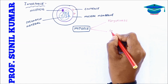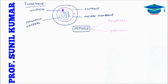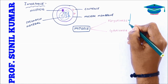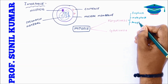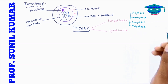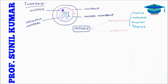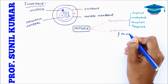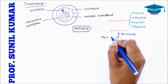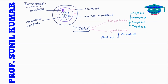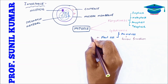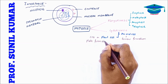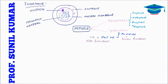Let's understand the first division — mitosis, an equational division where everything is equal. There are two parts: first karyokinesis, followed by cytokinesis. Karyokinesis is division of the nucleus and includes four stages: prophase, metaphase, anaphase, and telophase. For cytokinesis, animal cells show furrow formation and plant cells show cell plate formation.